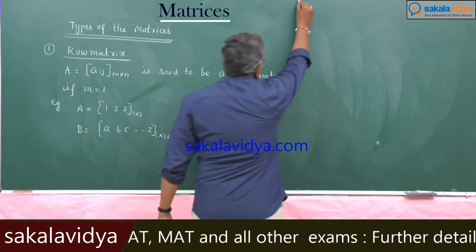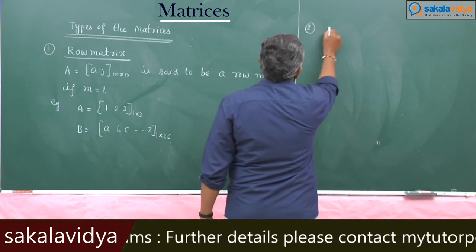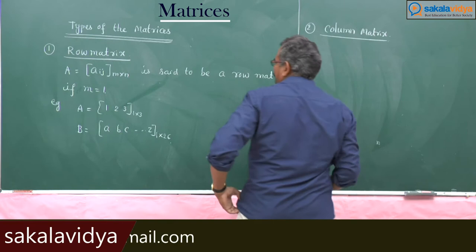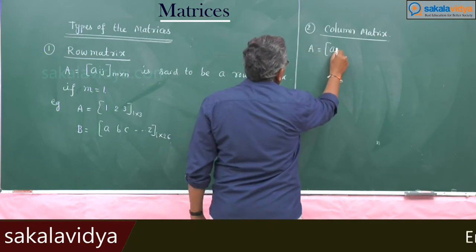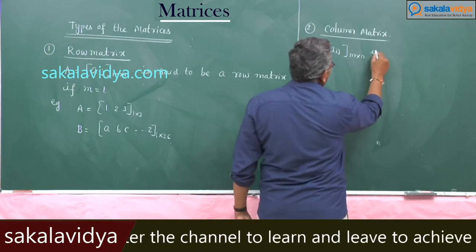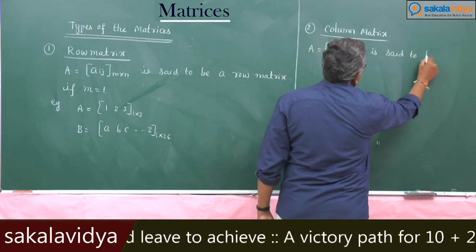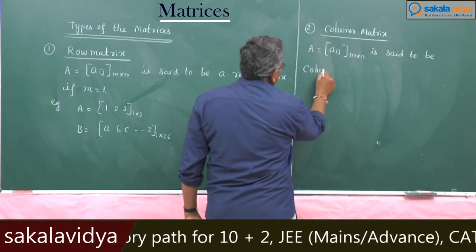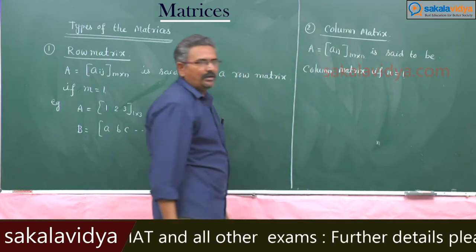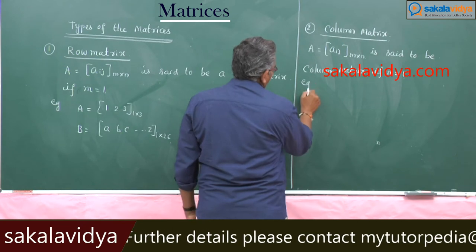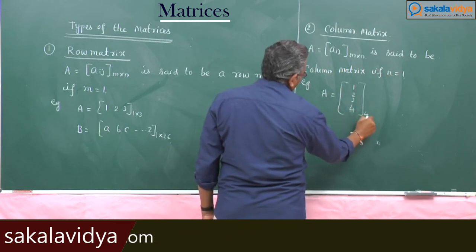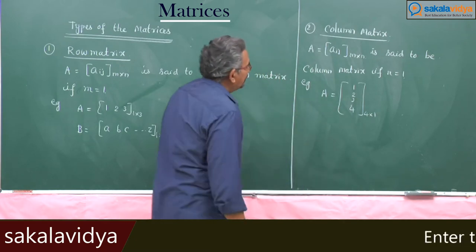Similarly, next one is column matrix. A = [Aij] of order m by n is said to be a column matrix if n is equal to 1. The order will be of the form m by 1. Example: A = [1, 2, 3, 4], this is 4 rows and 1 column, so 4 by 1. This is a column matrix.